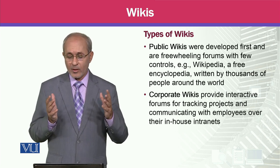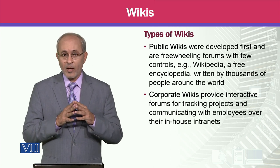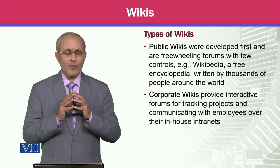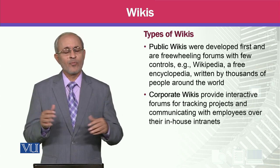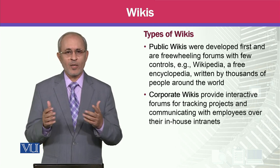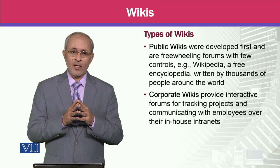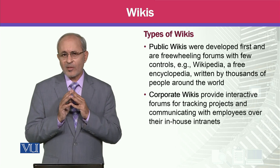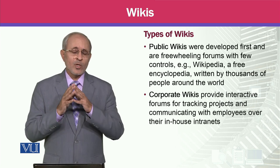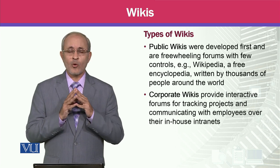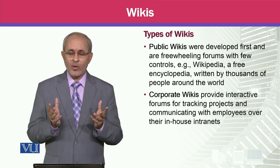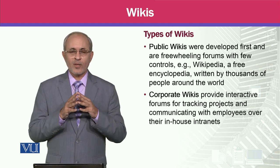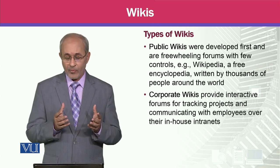Wikis کی دو types ہیں۔ سب سے پہلے public wikis، جو general public کے لئے ہیں۔ These were developed first and are freewheeling forums with few controls. اس میں control کم سے کم ہوتا ہے — عام لوگ جو چاہیں create، edit، update، delete، یا add کریں۔ اس کی سب سے بڑی مثال Wikipedia ہے، جو ایک free internet-based encyclopedia ہے جسے دنیا کے عام لوگ مل کر create اور update رکھتے ہیں۔